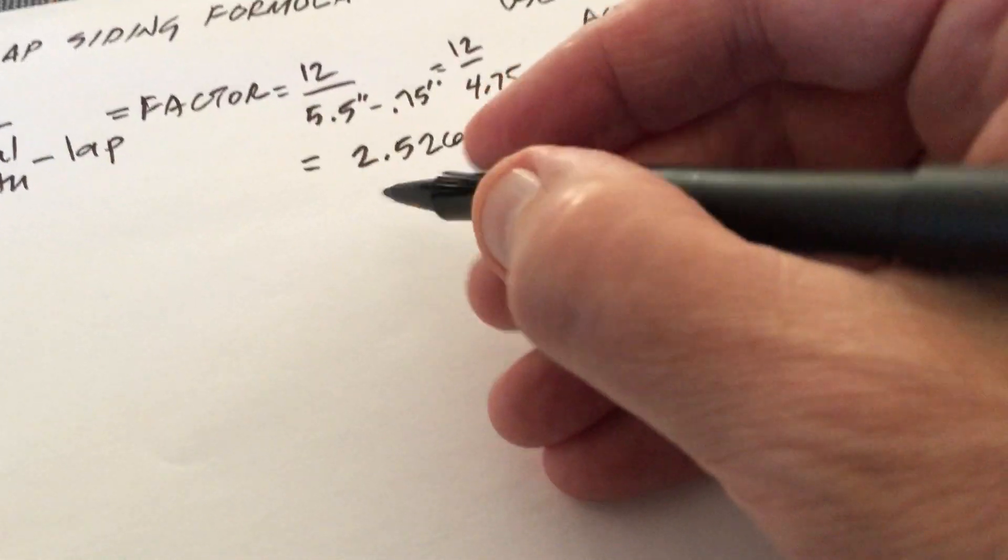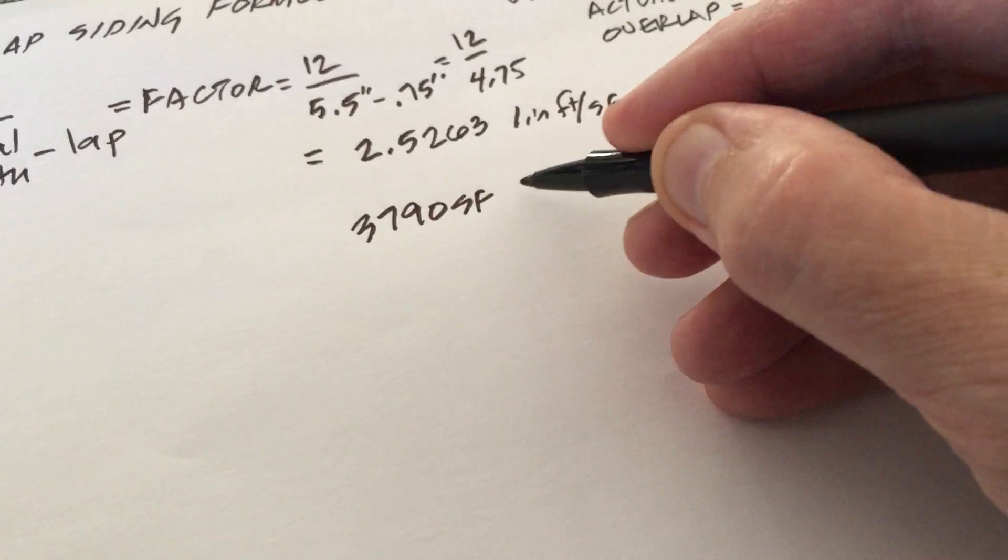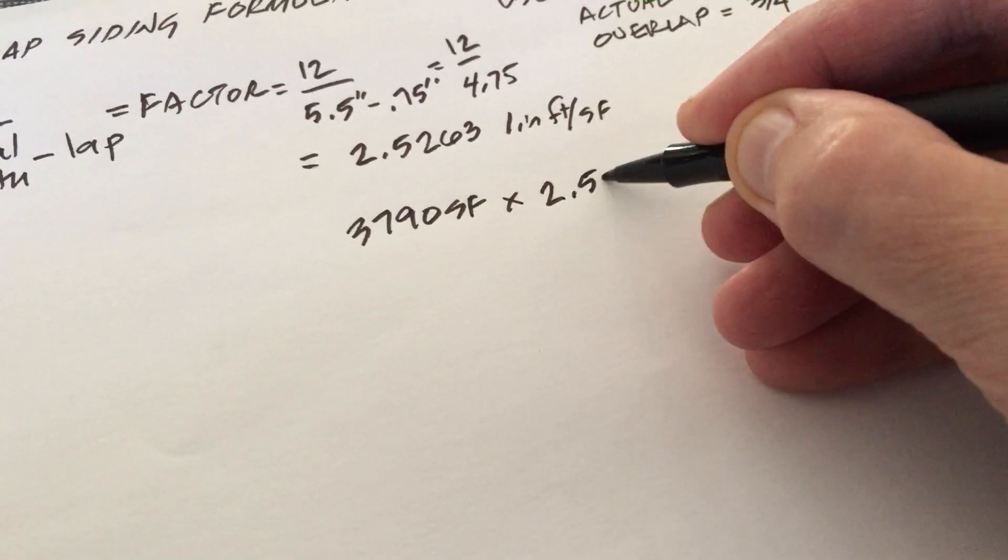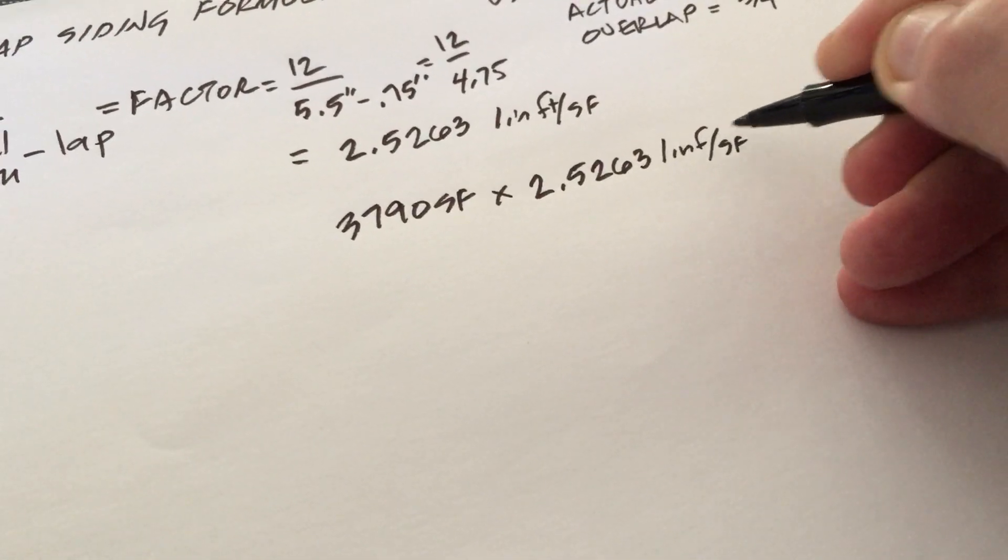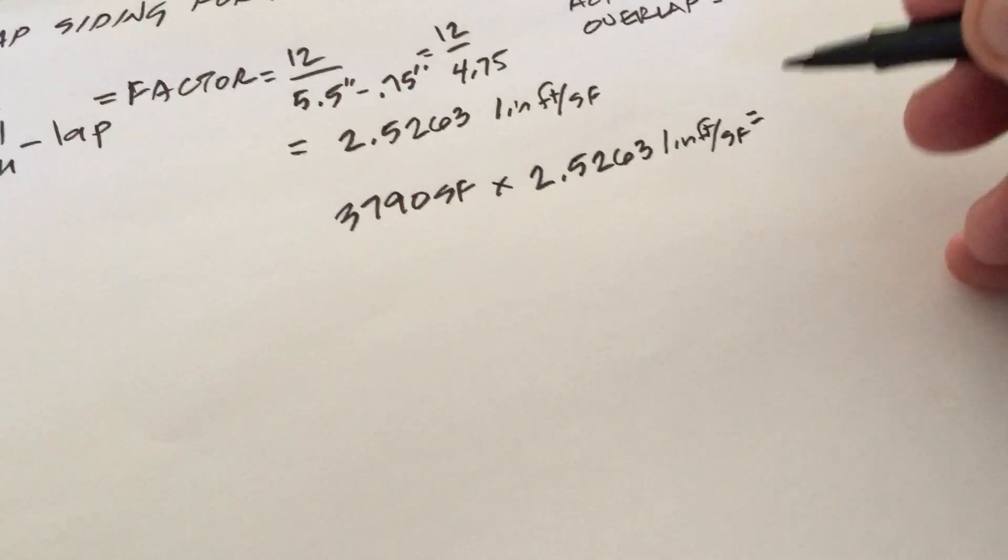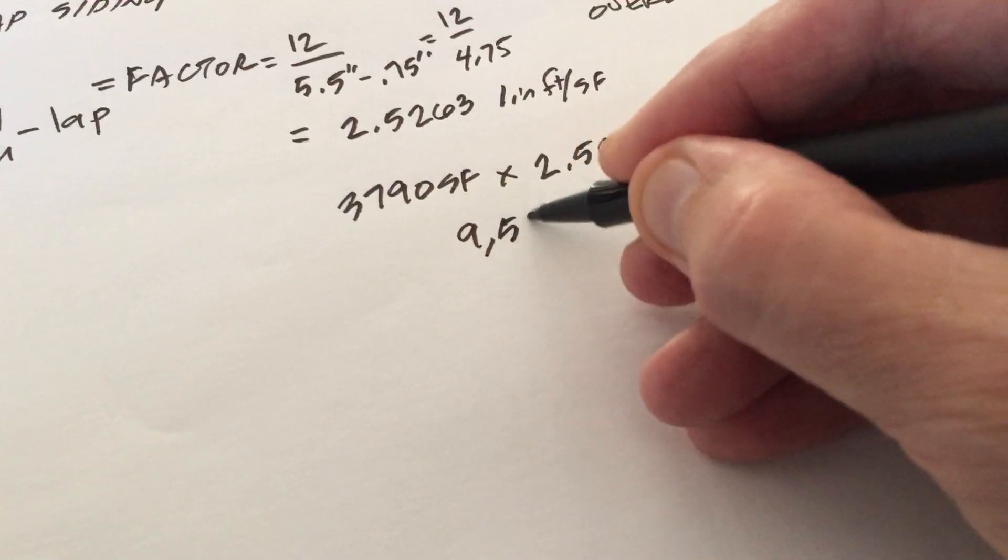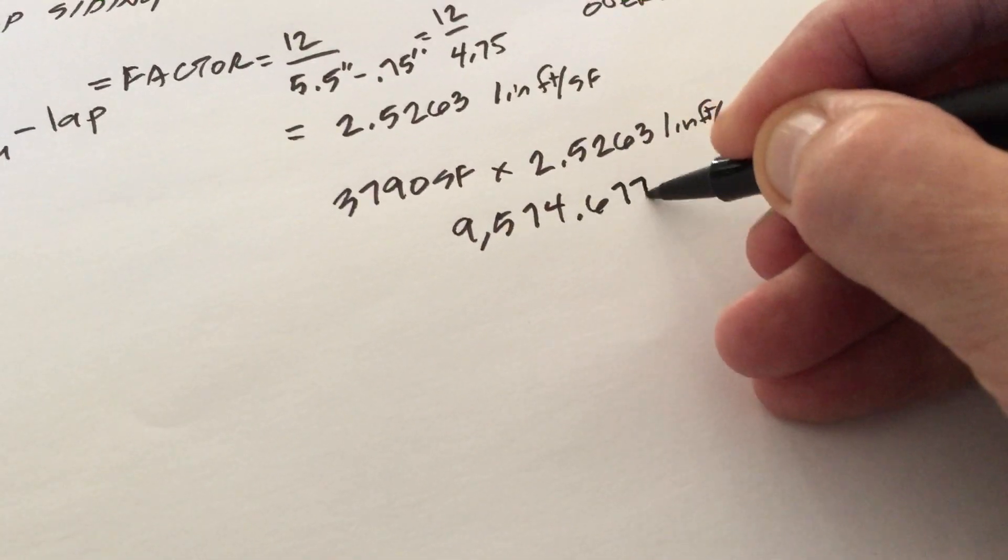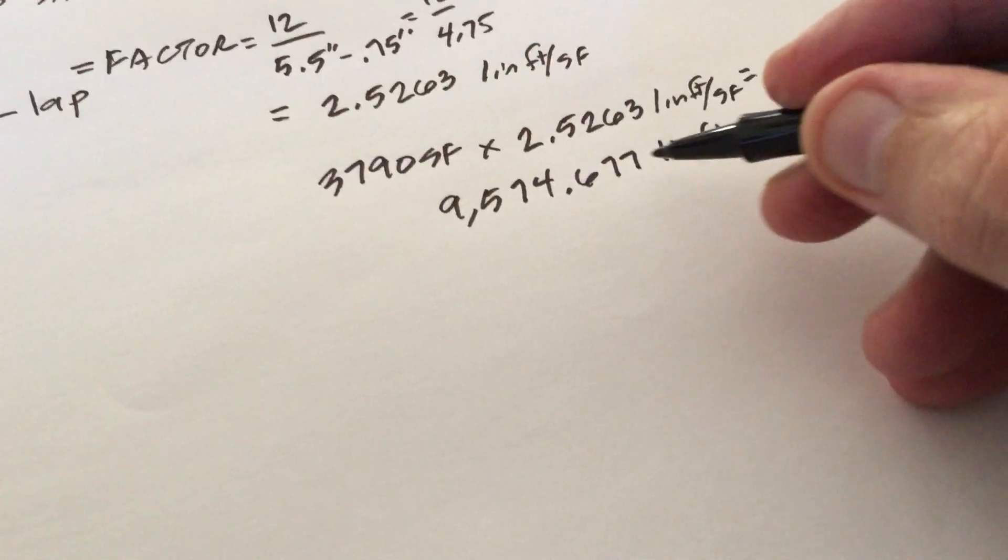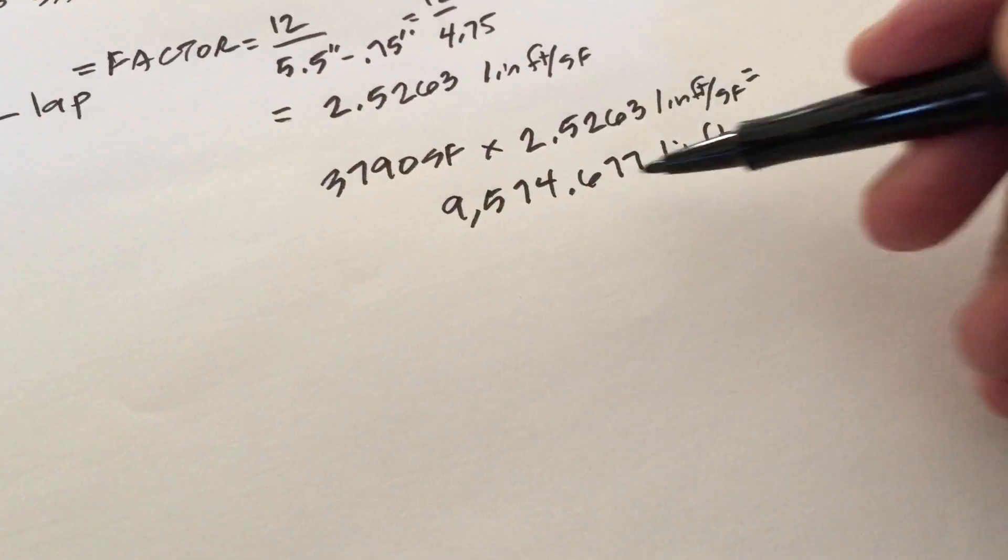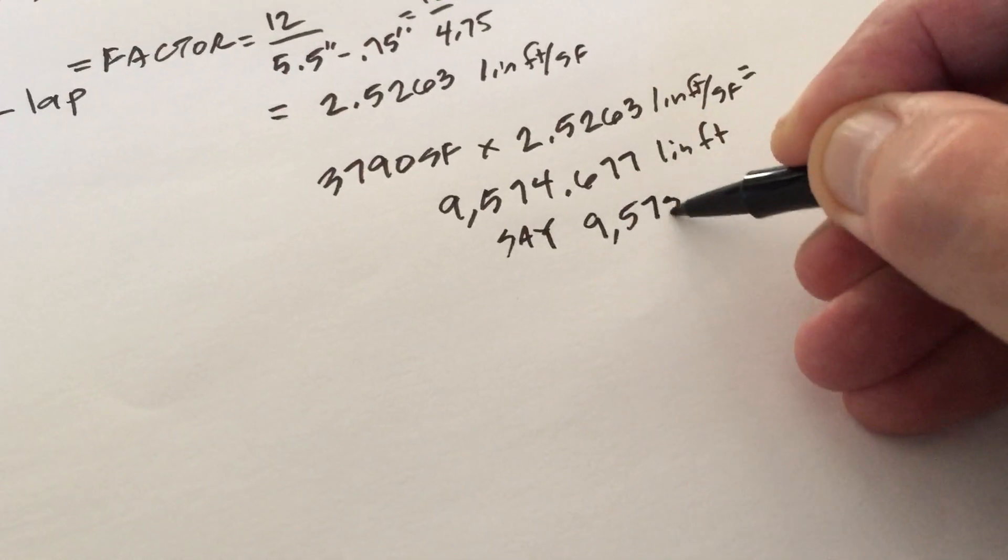Now I'll take my 3,790 square feet times my factor of 2.5263 linear feet to cover a square foot and I will find that 9,574.677 linear feet cover my area. Say 9,575 linear feet.